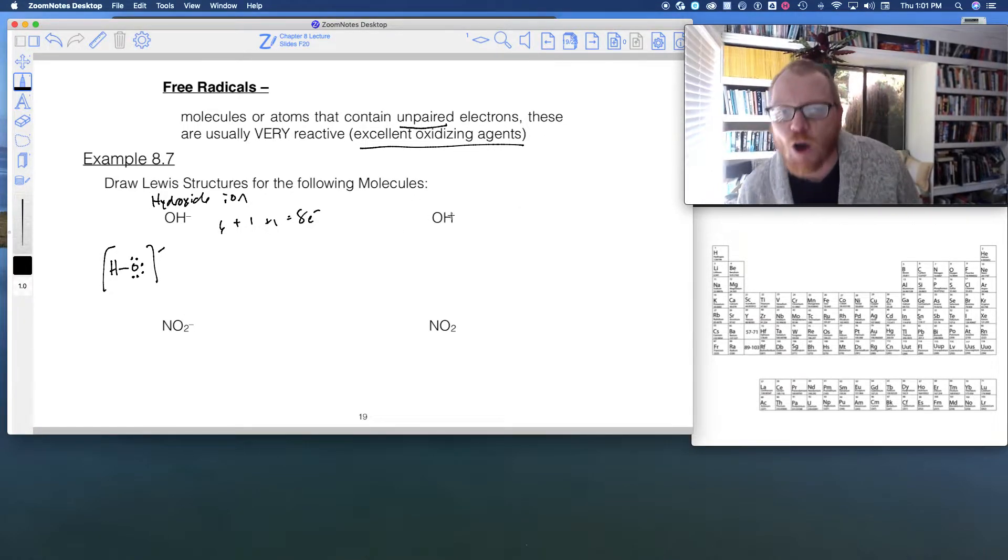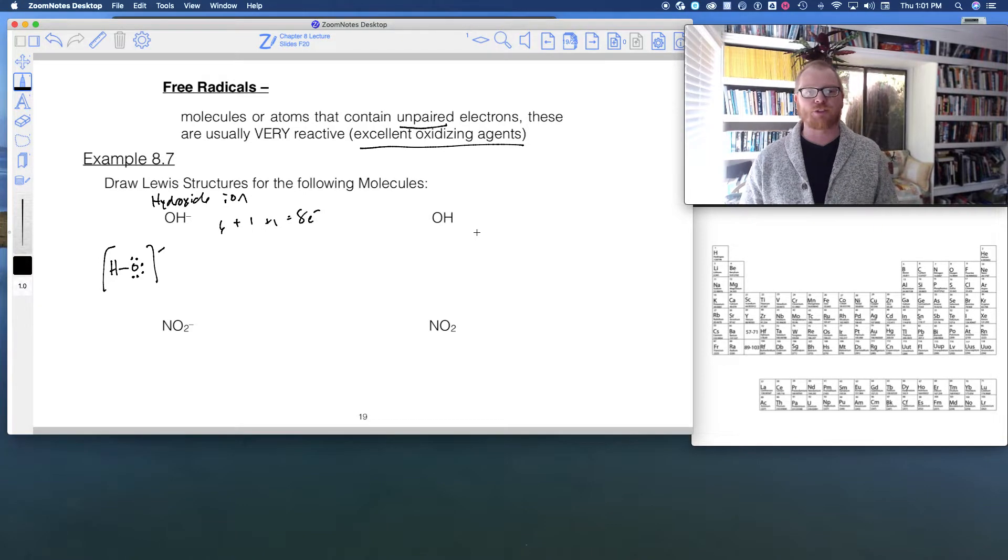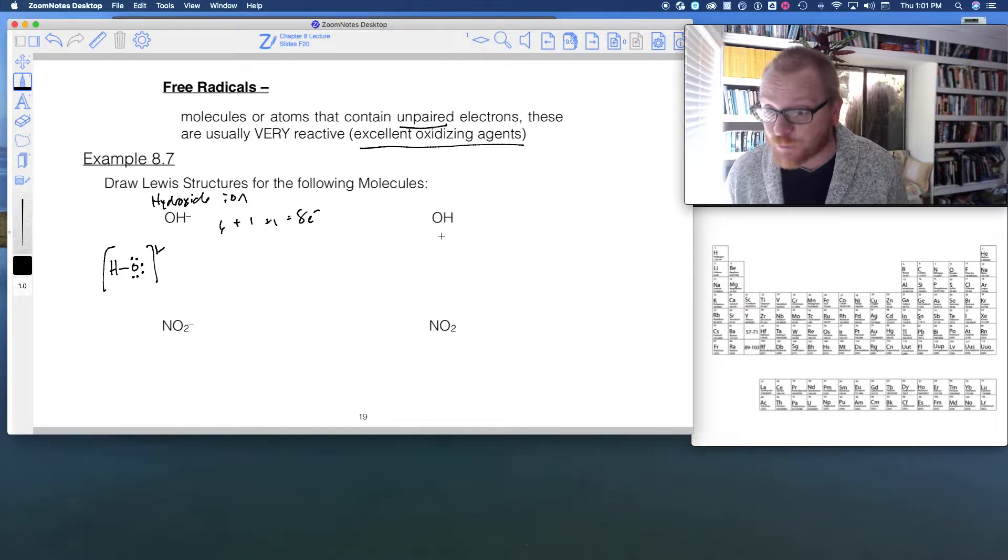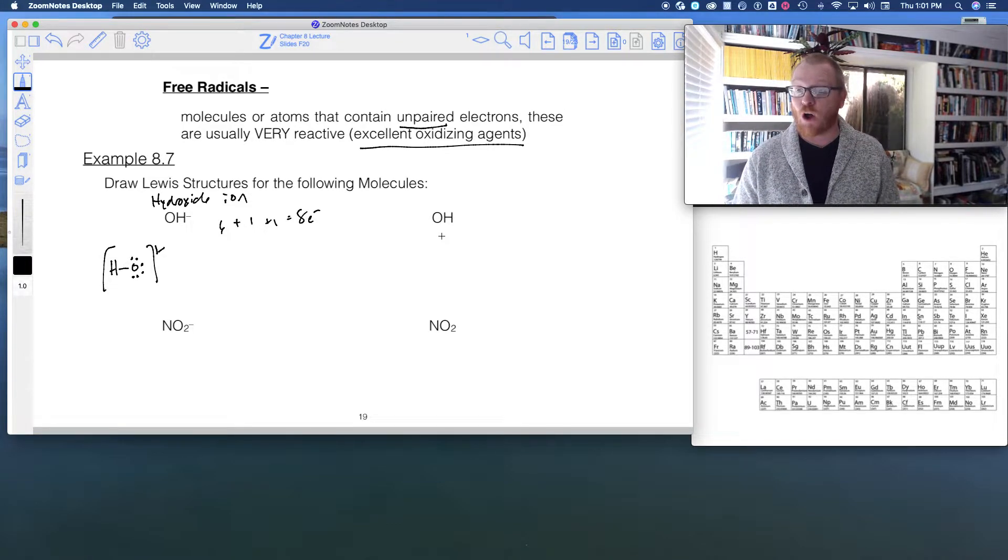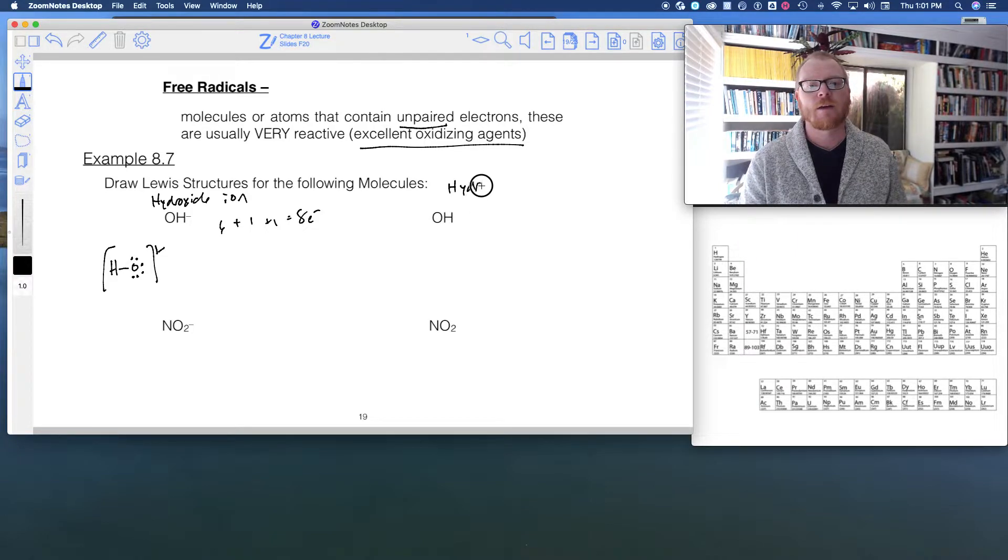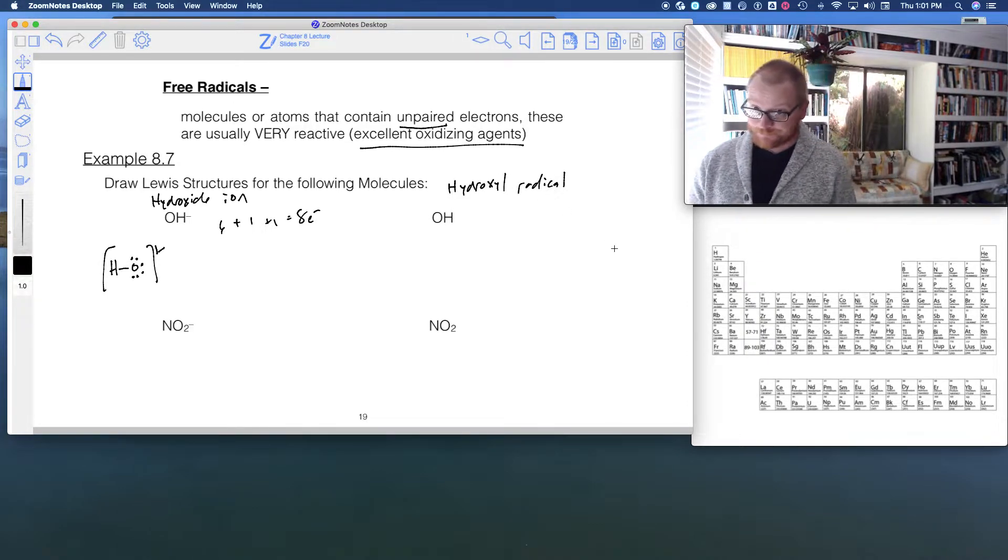Now what about OH without the minus? That's really important. That's not a typo. So when you see this in chemistry, keep in mind that that's purposeful. We can have this thing called OH without the minus. This is called the hydroxyl radical.